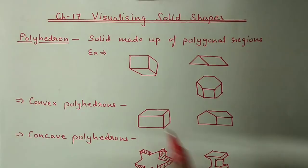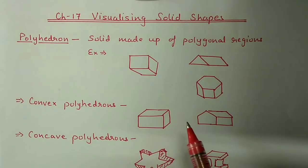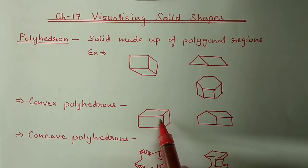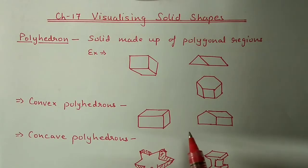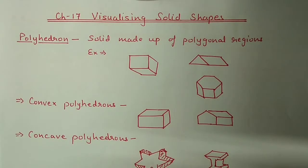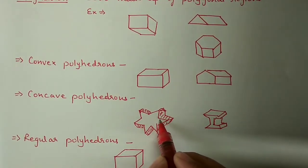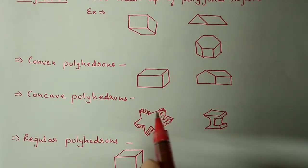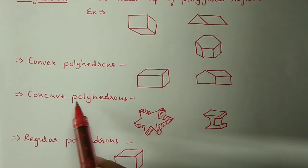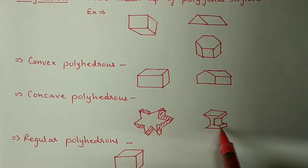Again, these polyhedrons we can divide into many parts like convex polyhedron. Convex polyhedron means when each and every polygon is a convex polygon, or if every angle is less than 180 degrees then we will call it a convex polyhedron. And if any interior angle is more than 180 degrees, as you can see in this figure, then it will come under a concave polyhedron - it will make a cave shape.